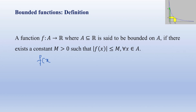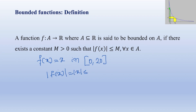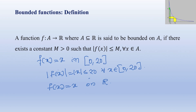For example, if we consider the function f(x) = x on the closed interval [0, 20], then this is a bounded function because |f(x)| = |x| ≤ 20 for all x in the domain [0, 20]. But if we consider the same function f(x) = x on the set of all real numbers, then there does not exist any positive number m > 0 such that |x| ≤ m for all x on the real line.